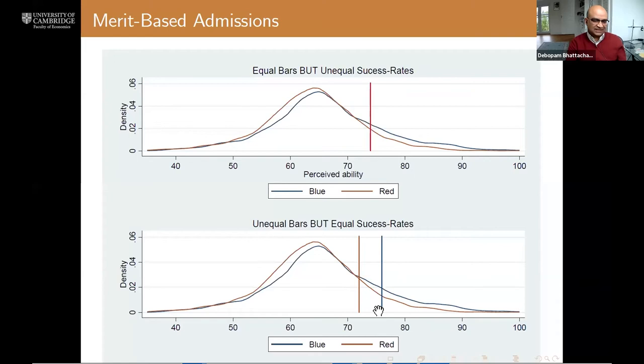The other way to do this is you say, well, I don't care so much about merit—I want to equate the success rates of two groups. But if the two curves look like this, the only way you can equate the success rate is by having different thresholds for different groups. In this case, the blue people are being held to a higher threshold than the red people, but the area under the blue curve to the right of the blue vertical line is the same as the area to the right of the red curve. So this is where the success rates are equal, but the threshold for merit-based admissions are different for the two groups.